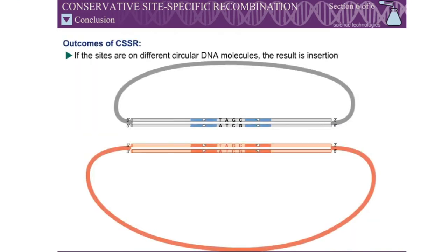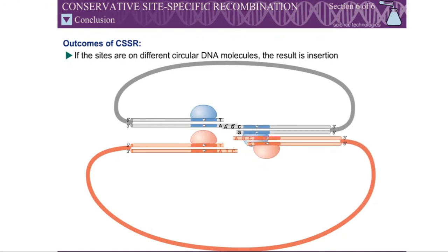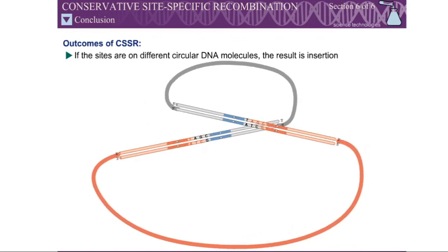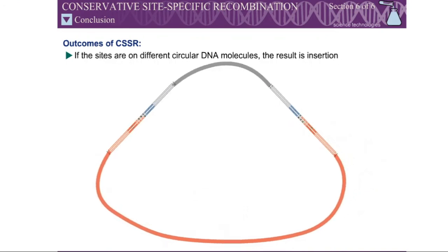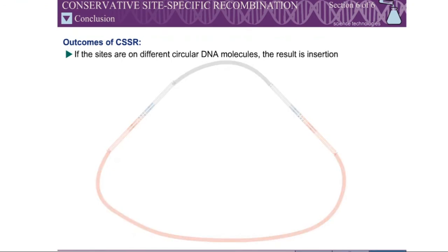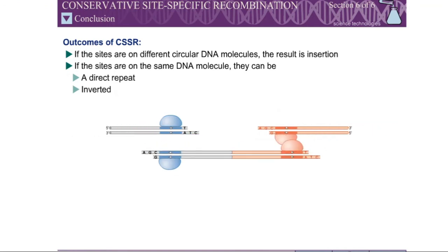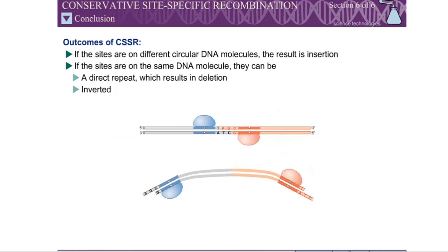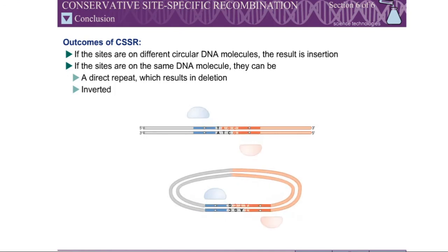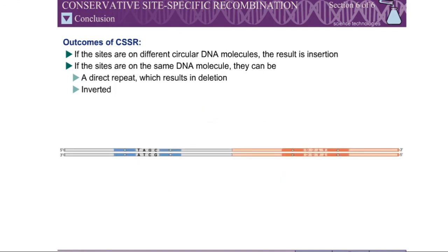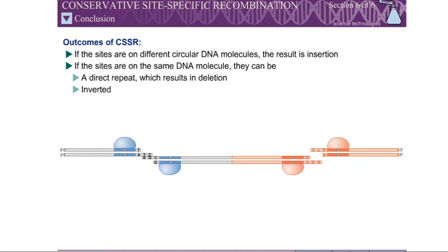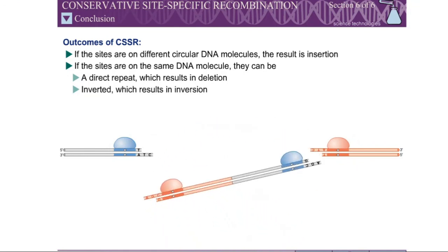If the recombination sites are on different circular DNA molecules, the result of site-specific recombination is insertion of one of the molecules into the other. If both recombination sites are on the same DNA molecule, they can be a direct repeat with respect to one another, or inverted with respect to one another. Recombination between a pair of direct repeats will result in deletion of the DNA segment between the two sites. In contrast, recombination between a pair of inverted recombination sites will invert the DNA segment.